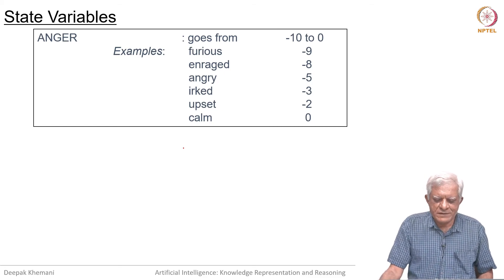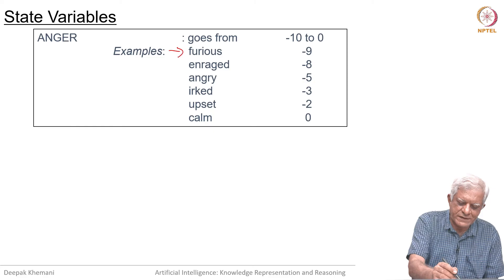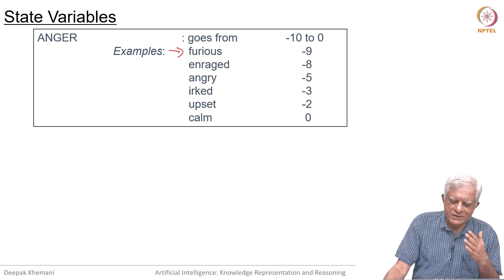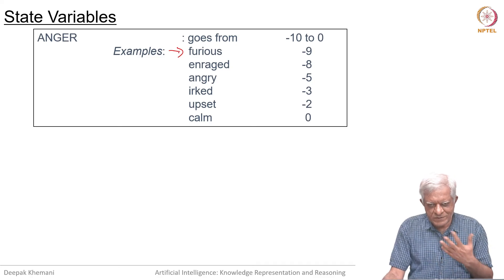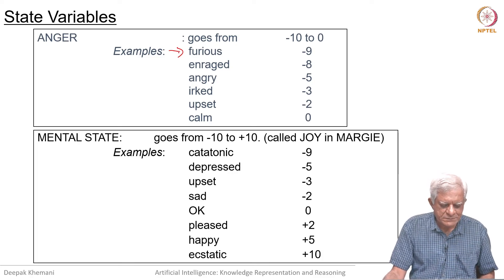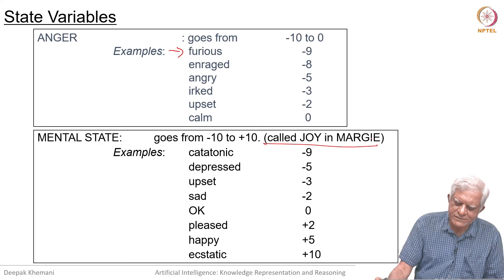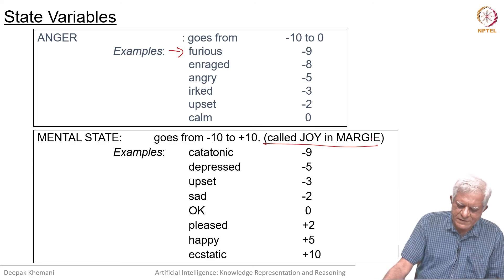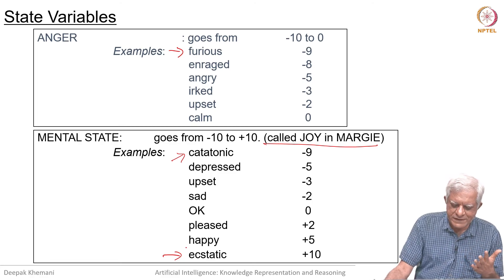Anger can also go from minus 10 to 0. At minus 10 you are furious — that is the highest level of anger. Then you have enraged, angry, irked, upset, and at 0 you are calm, which means you are not angry. Mental state was a variable which in the program called Margie was called Joy. It goes from minus 10 to plus 10 — from catatonic at one end to ecstatic at the other — with various levels: depressed, upset, sad, ok, pleased, happy, and so on.